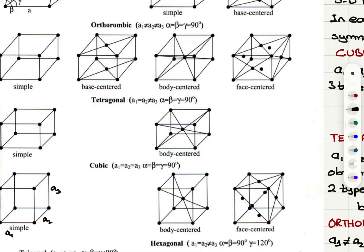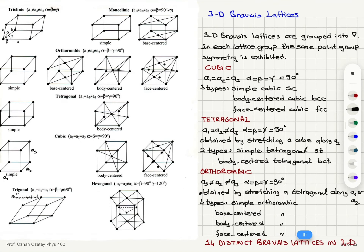The angles alpha, beta, gamma between a1, a2; a2, a3; and a1, a3 are all 90 degrees. So the two types are simple tetragonal and body-centered tetragonal.